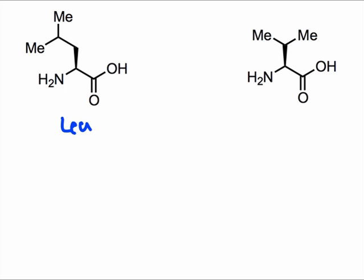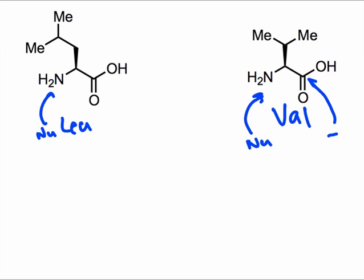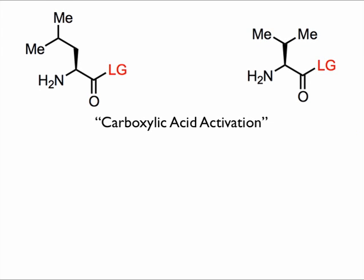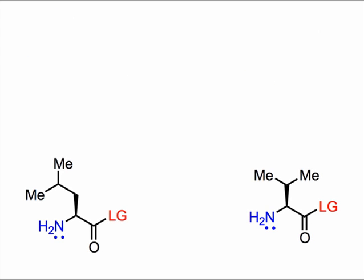Let's begin with two amino acids: leucine and valine. The amino groups in both of these amino acids may act as nucleophiles. Now take a moment to appreciate how the carboxylic acid is a sort of masked electrophile. If we could somehow replace the hydroxyl groups with good leaving groups, the carbonyl carbons would become powerful electrophiles. This process is called carboxylic acid activation. If we activate both carboxylic acids, when we mix the two amino acids together, two distinct nucleophiles and two distinct electrophiles will be present — and there's a problem here.